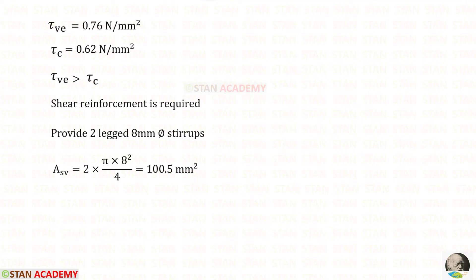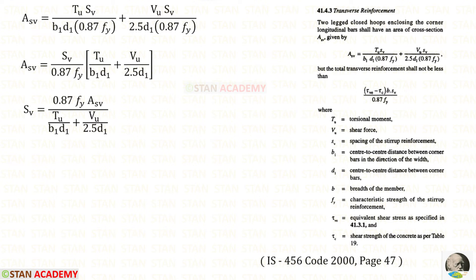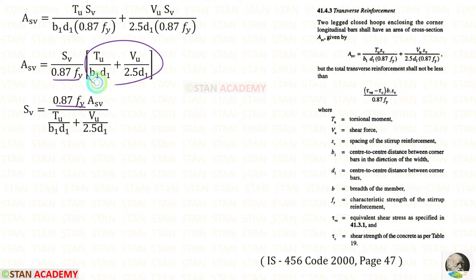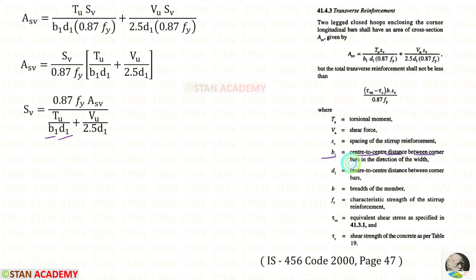Let us provide two-legged stirrups of 8 millimeter diameter, so the area of the vertical stirrups will be 100.5 millimeter square. We are going to design the spacing for the stirrups. In the code book, we open page number 47 and copy the formula. Taking SV upon 0.87Fy outside and rearranging terms, we get the spacing formula. B1 is the center-to-center distance between corner bars in the direction of the width; D1 is the center-to-center distance between corner bars in the direction of the depth.